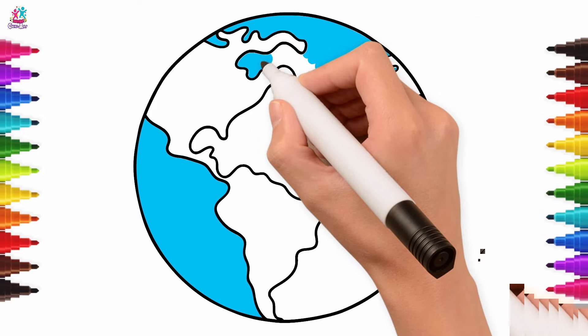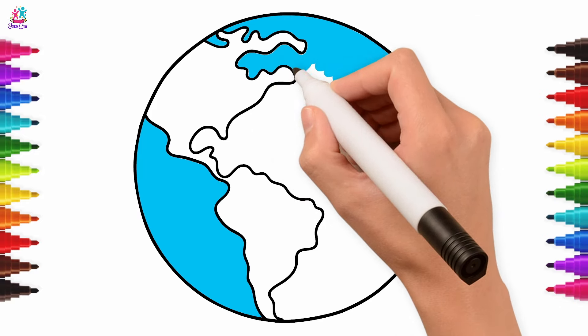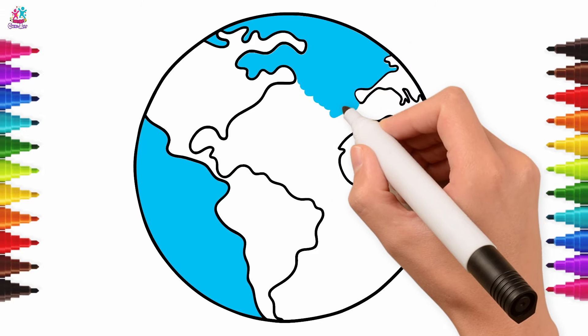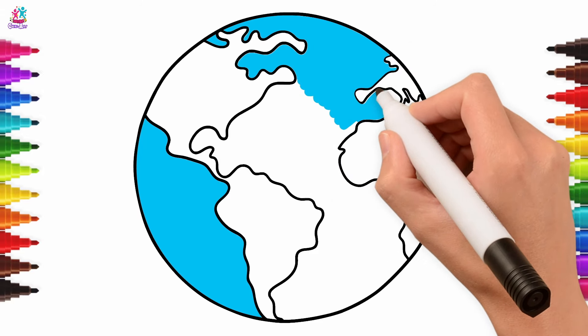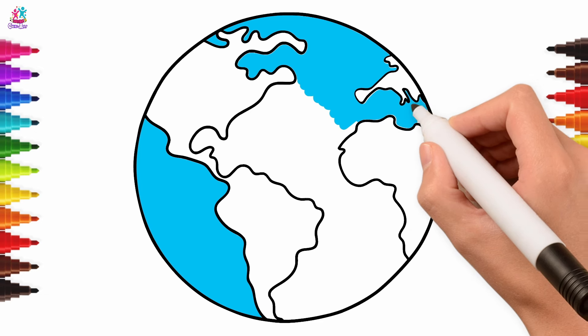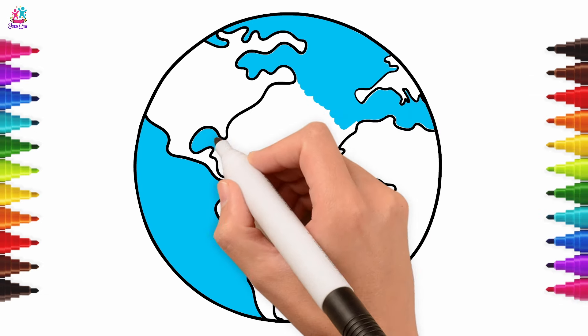Did you know that the Earth is mostly made up of water? That's right folks — there's way more oceans and seas than there is land on our planet. Earth is known as the blue planet because there is so much water.